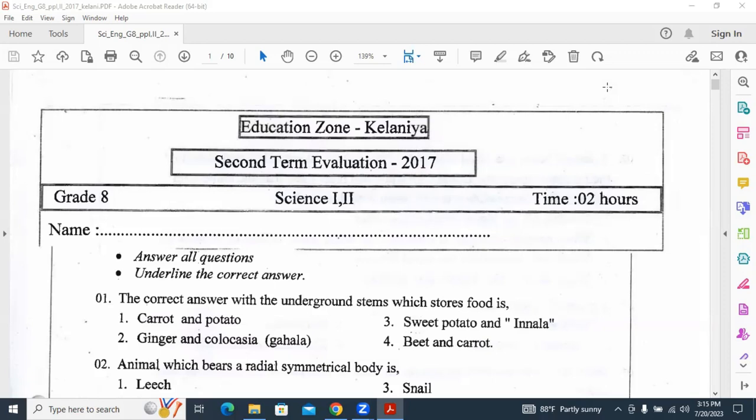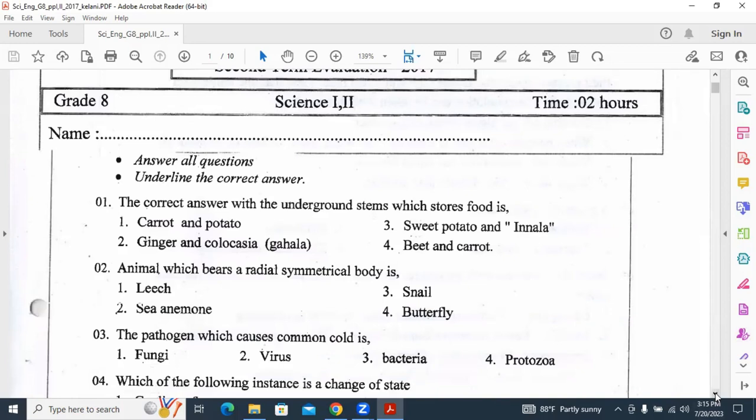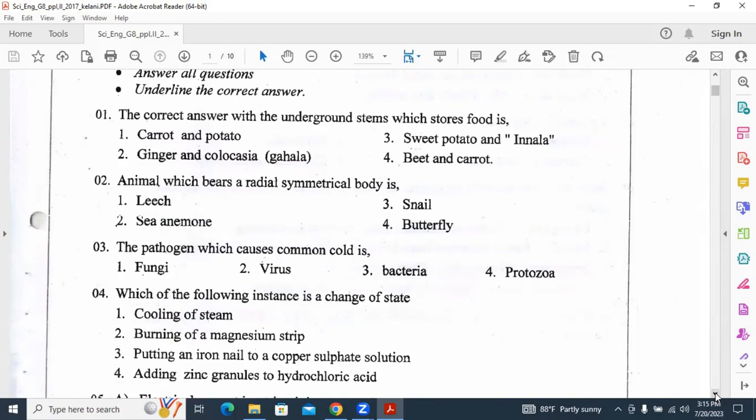The correct answer with the underground stems which store food is answer number two: ginger and colocasia. Inside their stems underground they store food we can eat them. Carrot, sweet potato, and beet store food in their roots. Potato, onion, and turmeric are other examples for underground stems which store food.